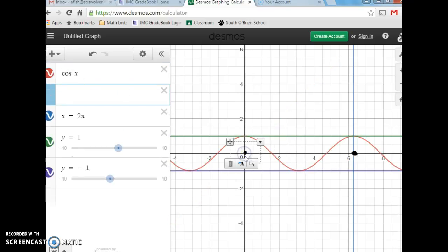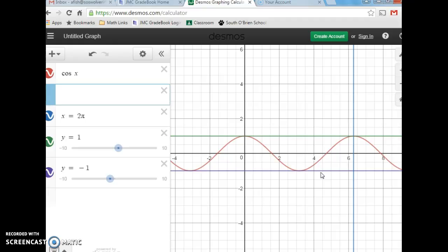So now, notice here, our range didn't change. Our domain did not change. We can still pick any values. But I start at a different point, and my wavelength is still the same, because it's still based on our unit circle.